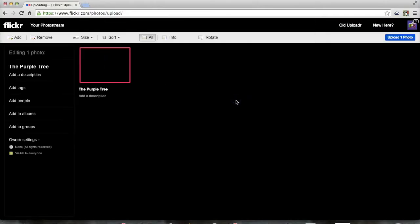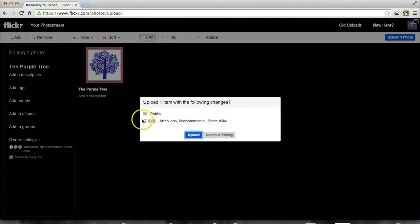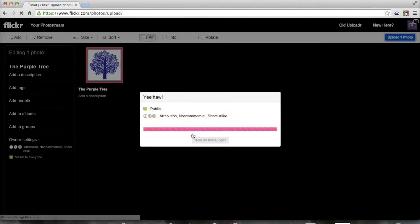Flickr is CC-supported, which means that you can license your work with CC licenses right on the site, like this. Just choose the license you want, and anyone else who views your photo will see that license.